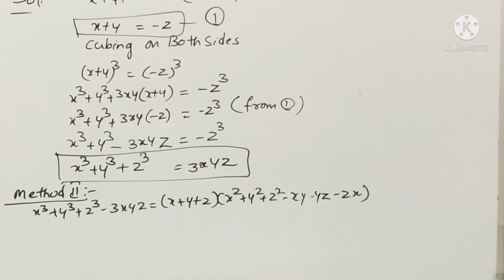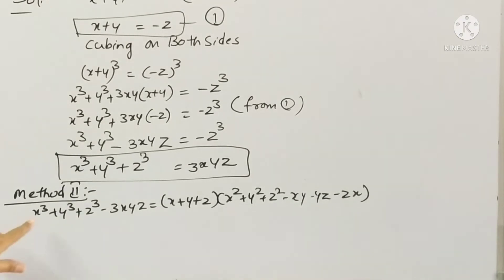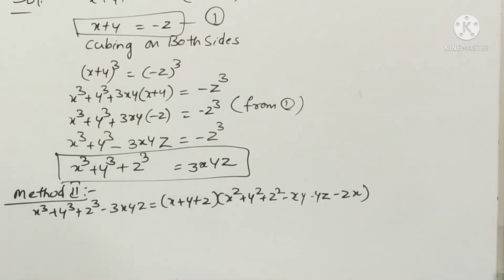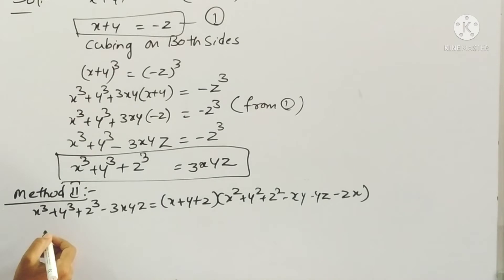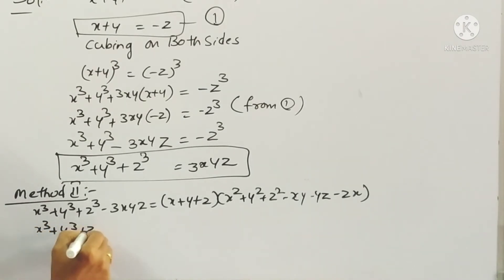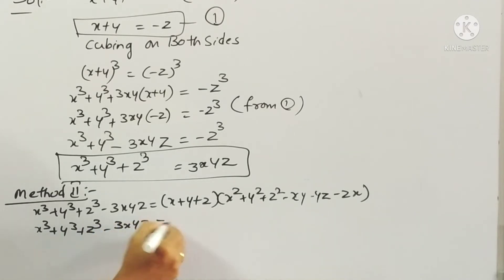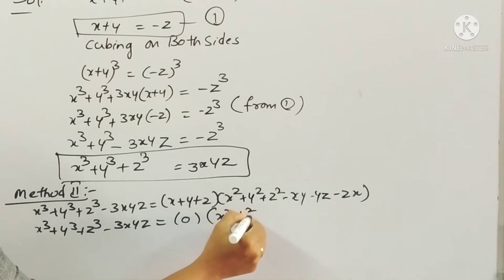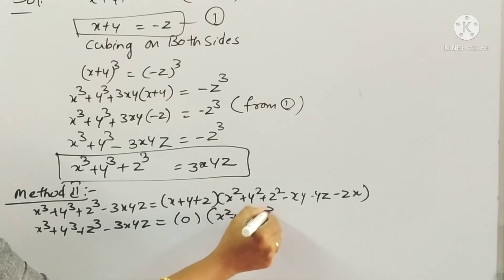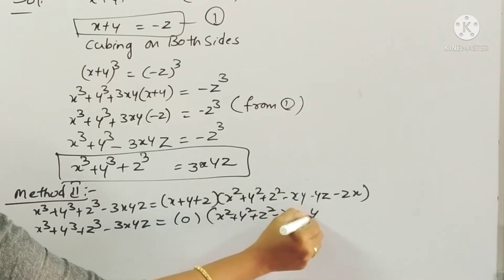Method 2: We know the identity x cube plus y cube plus z cube minus 3xyz equals (x plus y plus z) times (x² plus y² plus z² minus xy minus yz minus zx). We have x plus y plus z is equal to 0, so substitute 0 in place of (x plus y plus z).